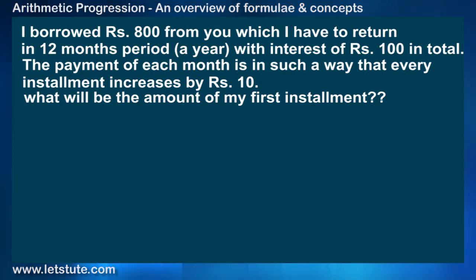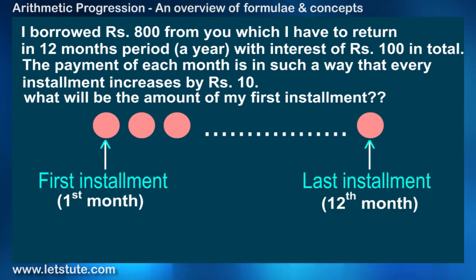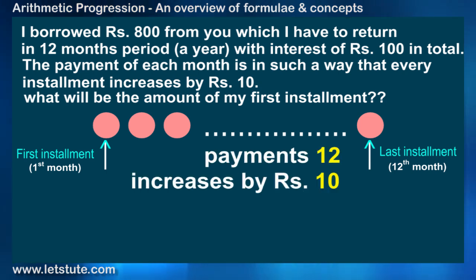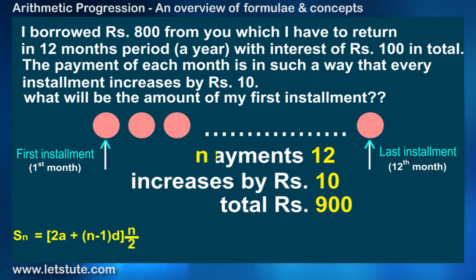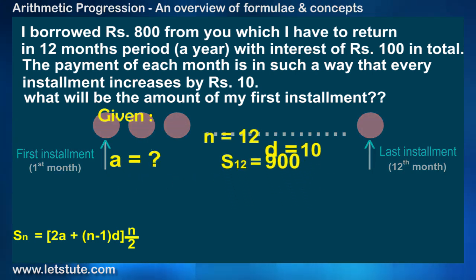Now this is something that I would write on my rough page to get the idea. Okay, so the first bubble is my first installment, that is first month, and the last installment, that is in the 12th month. Now this means I have to make 12 payments which increases by rupees 10 each month. And all this must total up to 900. So the conclusion I can draw is I have to use the formula of Sn given n equals 12 where S12 is the sum of all 12 payments and is 900. I have to find my first payment, means the first number of the sequence which is A where the common difference D is 10.